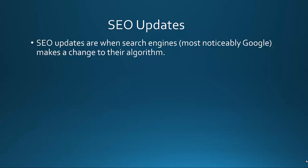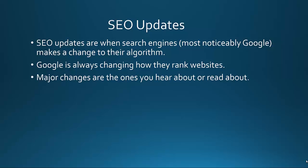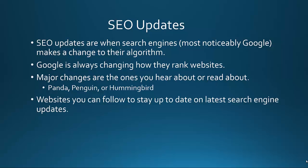Google is always changing how they rank websites. Major changes are the ones you hear about or read about, but they're constantly making changes. Updates like Panda, Penguin, and Hummingbird are ones we've all heard of or are familiar with, especially Panda and Penguin.